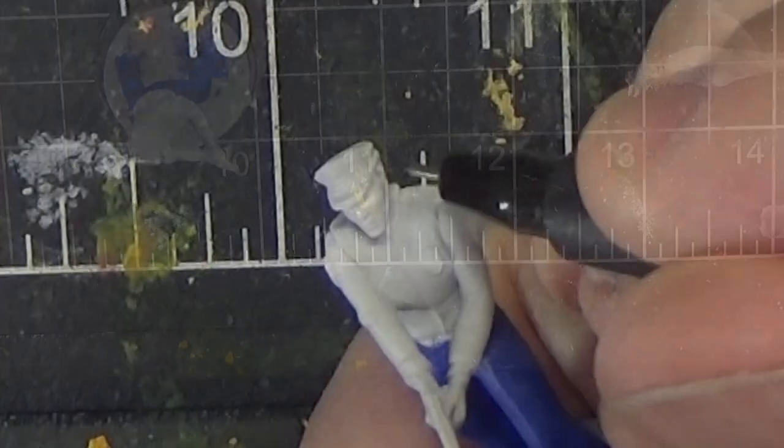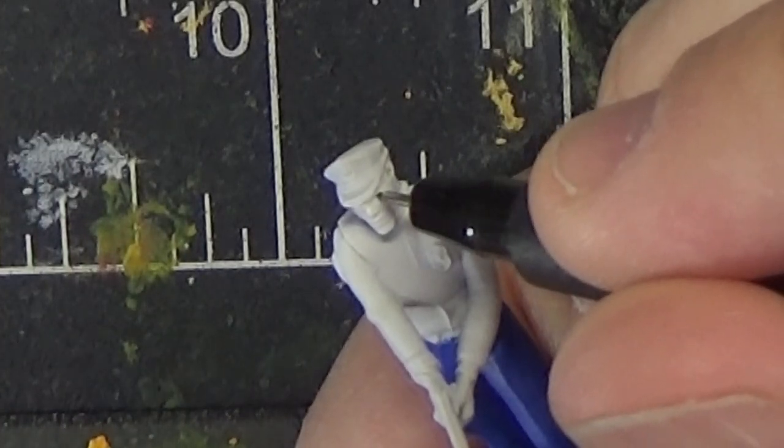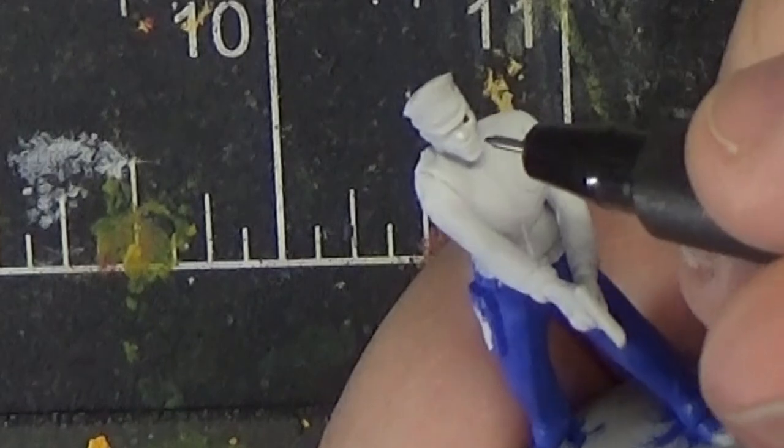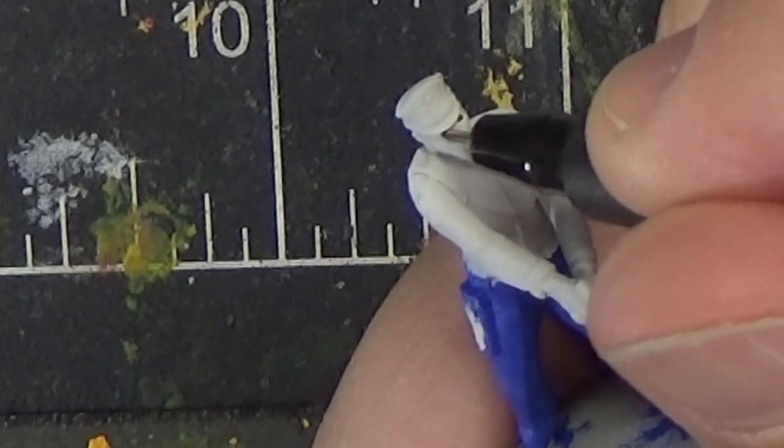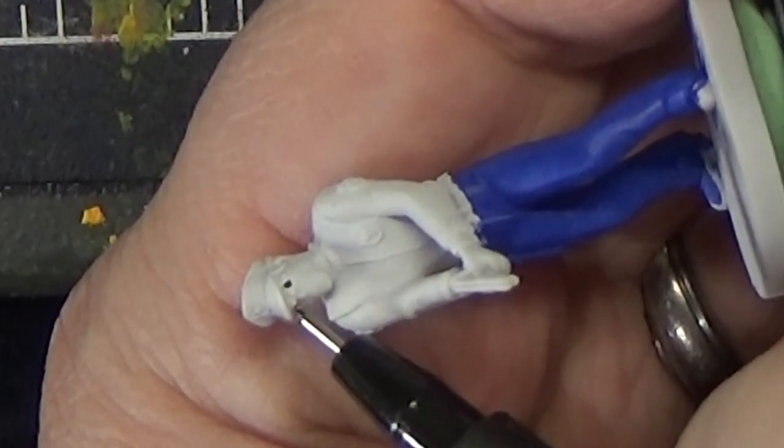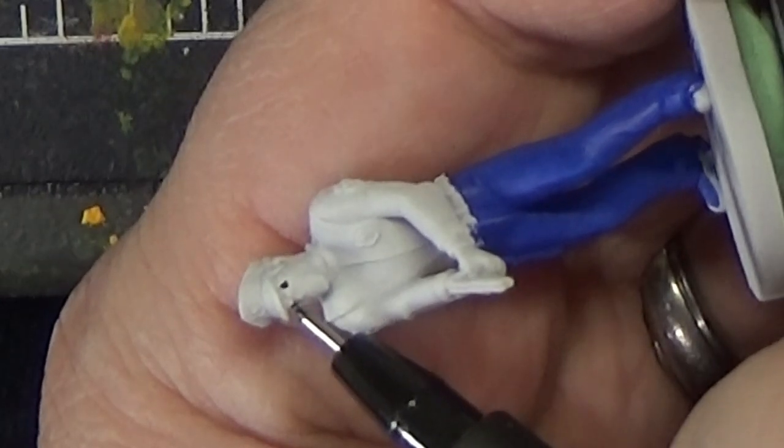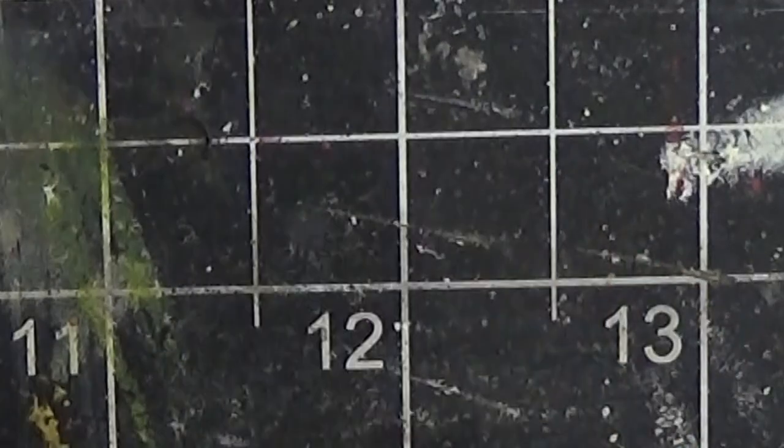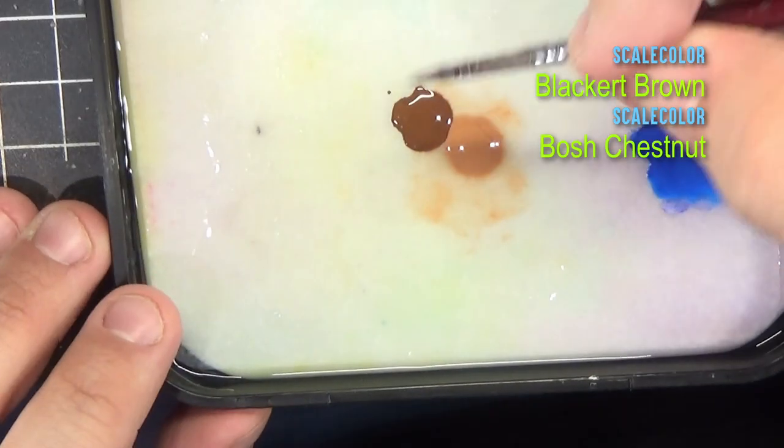Now before we move any further, I'm going to fill in the pupils of the eyes using a Faber-Castell Micron pen. I like to do this early because it's easy to mess up, and if you do mess up, you haven't ruined any paint job that you've already put down around the face. He looks a little bug-eyed, but we'll fix that with the flesh tones later.